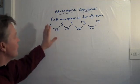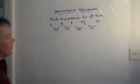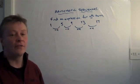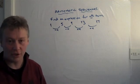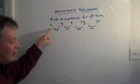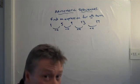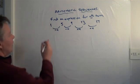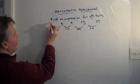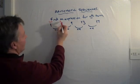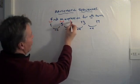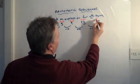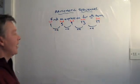The formula to work out the nth term requires us to find the difference, and we also need to find the zero term. I'm going to use a slightly different colour pen. This is the first term, that's your second, that's your third, that's your fourth, and that's your fifth.